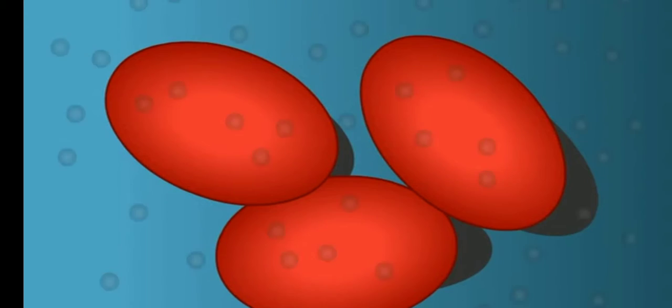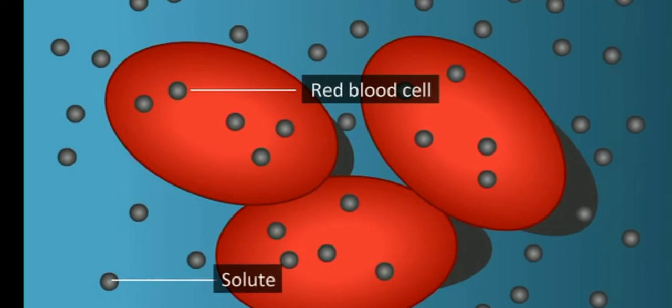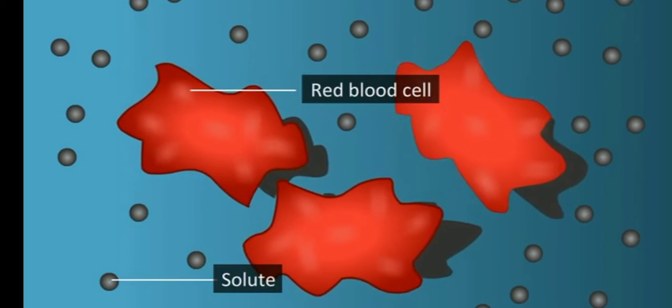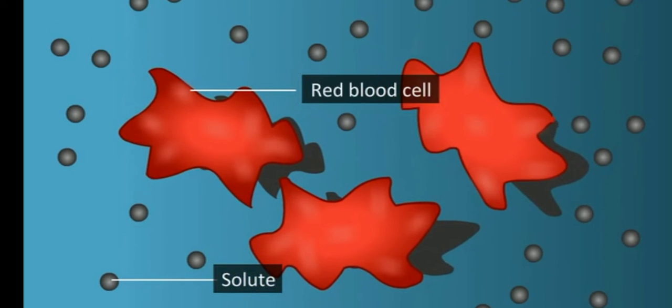When red blood cells are placed in hypertonic solutions, that is, solution of higher concentration, then water flows out of the cells and they shrink or collapse due to water loss by osmosis. This shrinkage of cells is called plasmolysis.